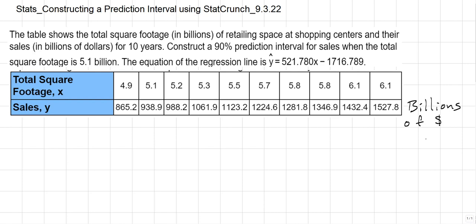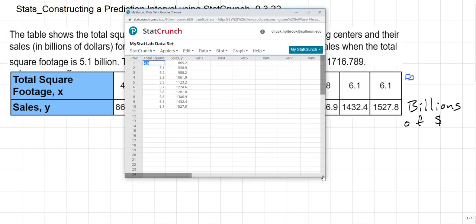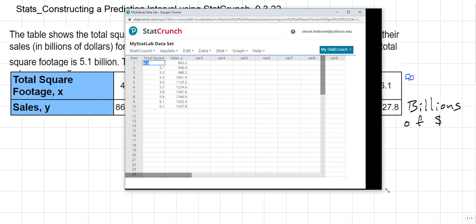So like I said, we're going to use StatCrunch for this. Depending on which online platform you're using for your homework, there might be a little blue square that is just to the right of your table. You can left-click that, and then you can open it in StatCrunch. But for this particular problem, I've already copied the table into StatCrunch. Let me make this a little bit bigger.